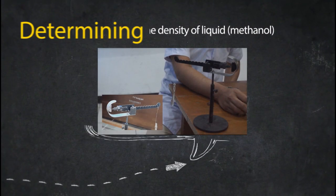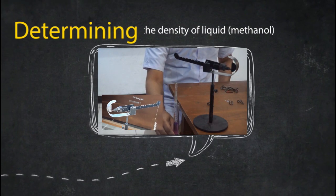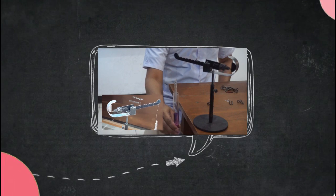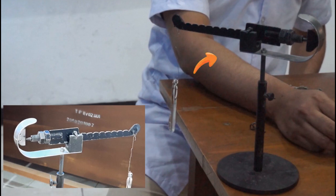Now we come up with the last experiment, which is to determine the density of liquid. In this experiment, we are using methanol. Okay, so this is what actually happens when you are using the Mohr-Westphal balance. First of all, you need to make sure that the needle in the left end here is pointing to zero, which means all the systems are in balance.